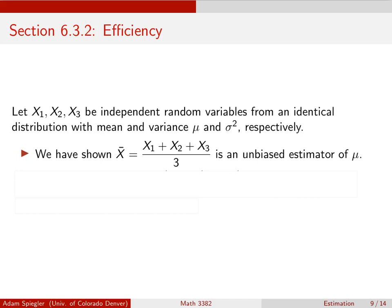The next property I want to look at, when comparing two different estimates for the same parameter, is the issue of efficiency. Let's take a sample of three values x1, x2, and x3 picked from a distribution that has mean mu and variance sigma squared. We've already shown that the sample mean is an unbiased estimator for mu.